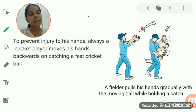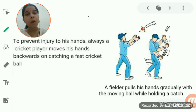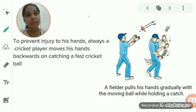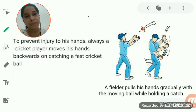In the previous classes we were talking about momentum and Newton's laws of motion. Momentum is equal to the product of mass and velocity, meaning momentum is directly proportional to both the mass and the velocity of the body.